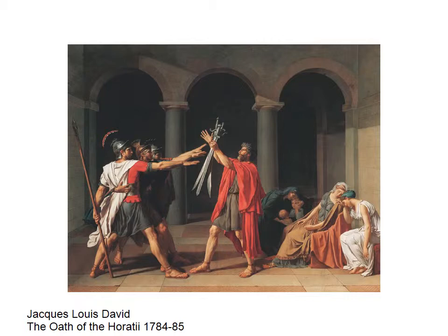On the right-hand side, these women in a swoon are not only fearful and upset that their husbands are going off to battle, but one of the girls is engaged — one of the boys shown here is married to one of the Curiatii women. It's really the early Romeo and Juliet story, where the families are intermarried but have a great and very long-standing feud between them.